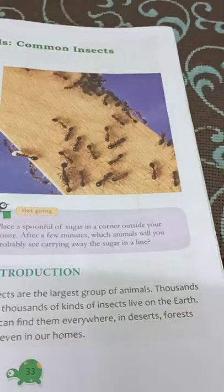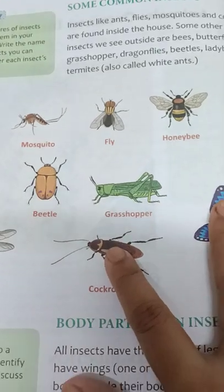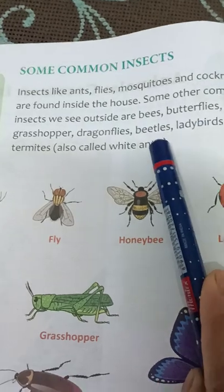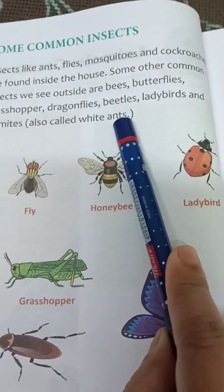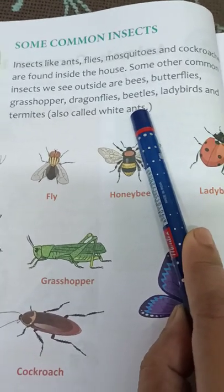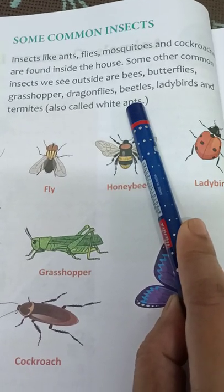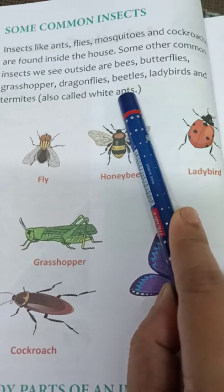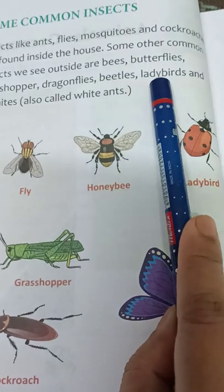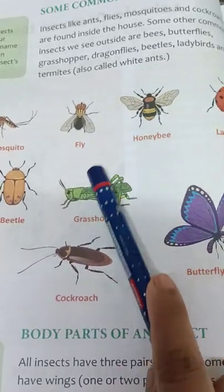Now we will see about some of the common insects. Common insects we see include ants, flies, mosquitoes, and cockroaches — we can see them in our own houses. Other common insects we see outside are bees, butterflies, grasshoppers, dragonflies, beetles, ladybirds, and termites, which are also called white ants.